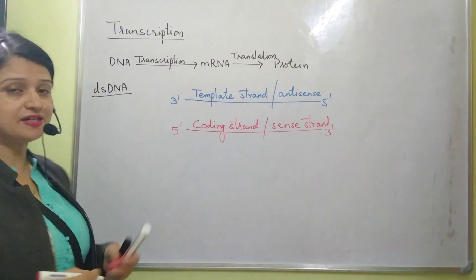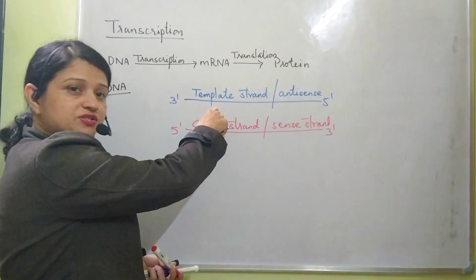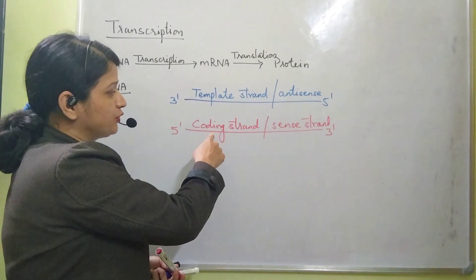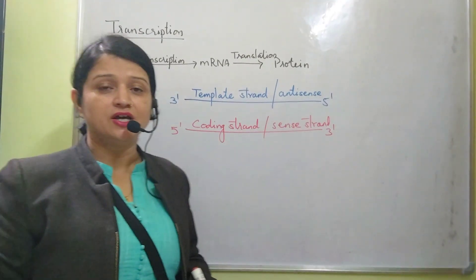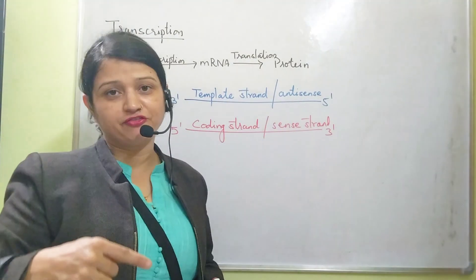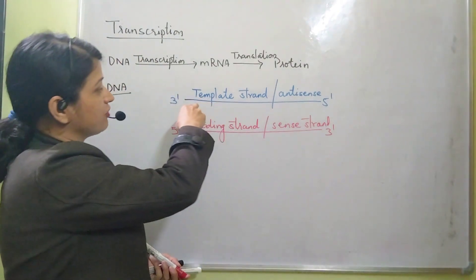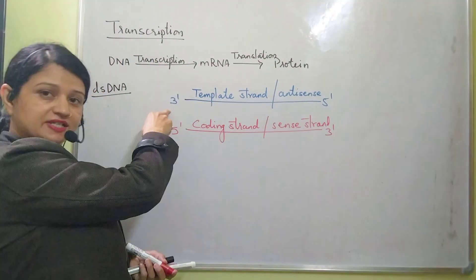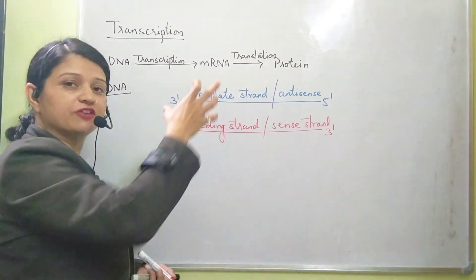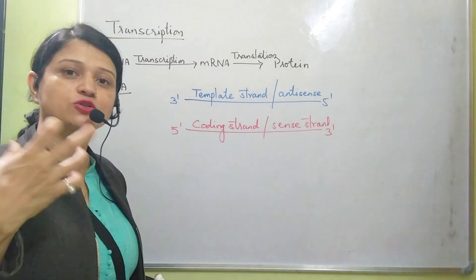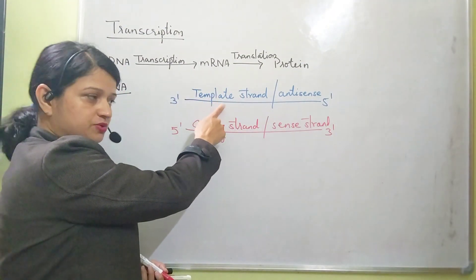In double-stranded DNA there are two strands: the template strand and the coding strand. The genetic information will be copied from one of the strands, and that strand from which the genetic information is copied is the template strand.